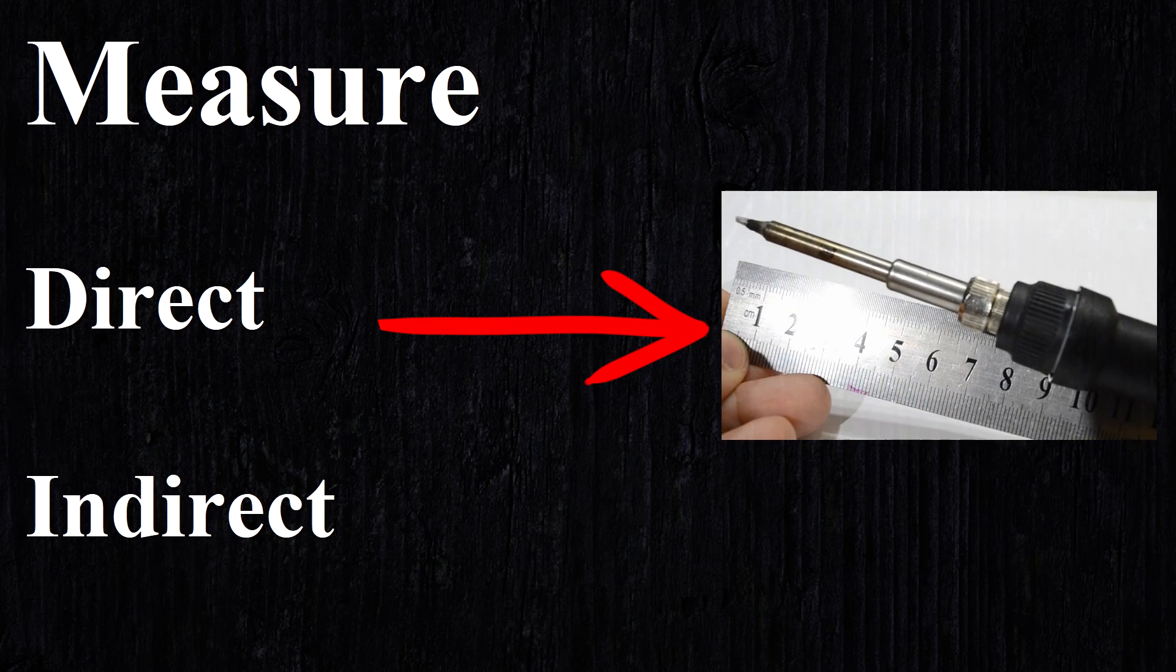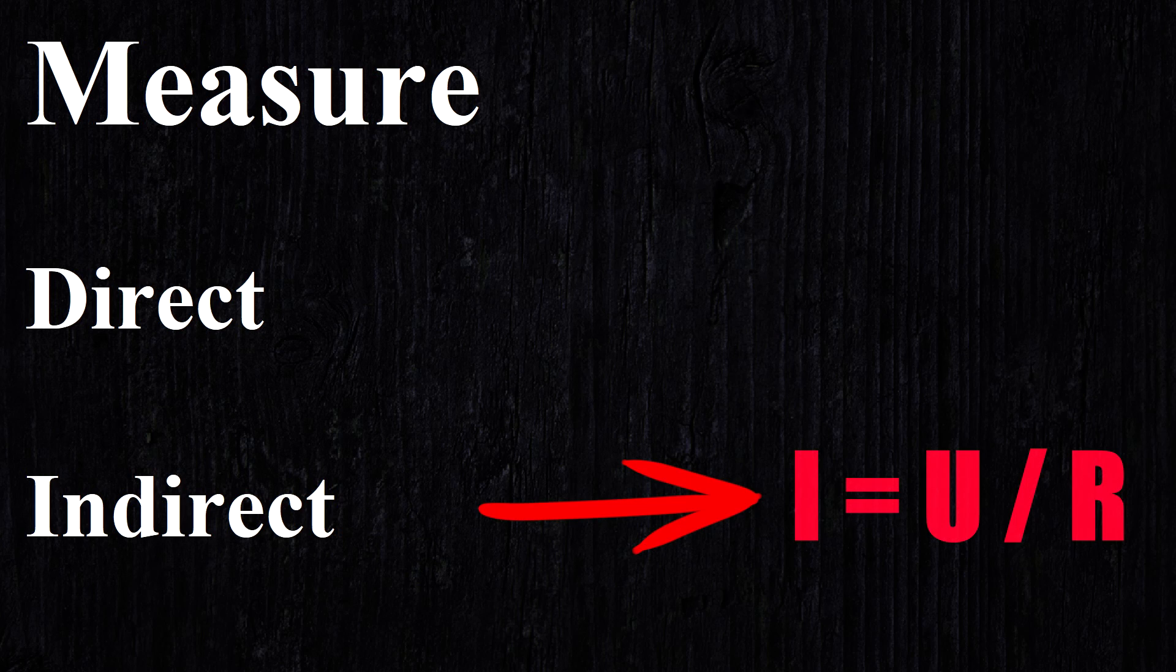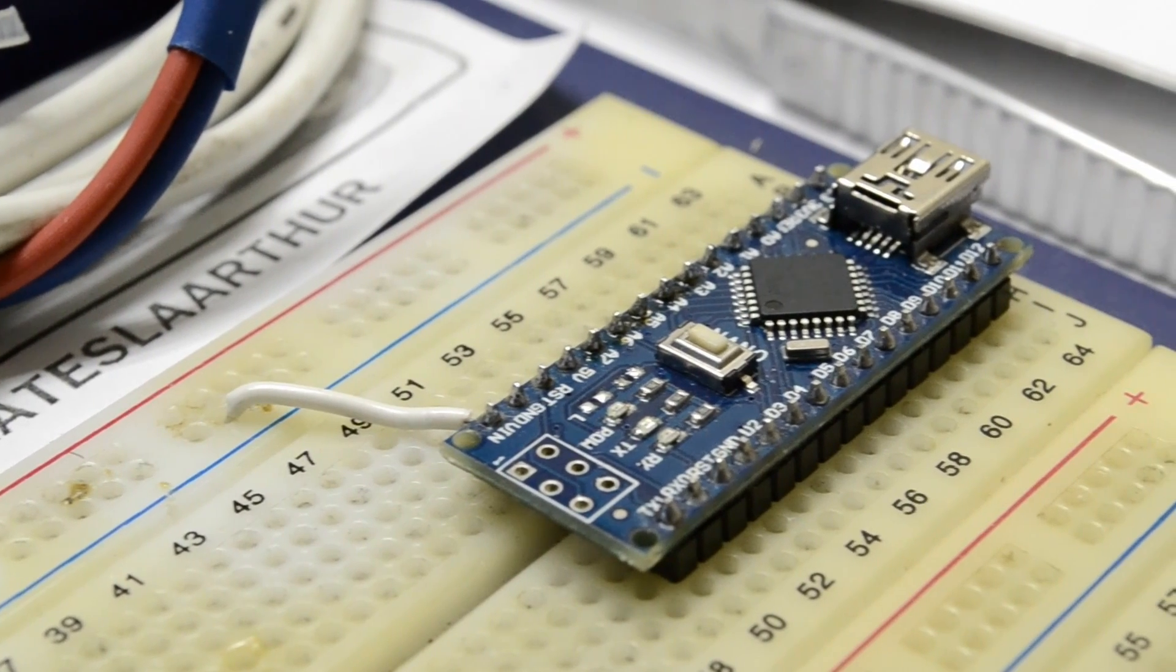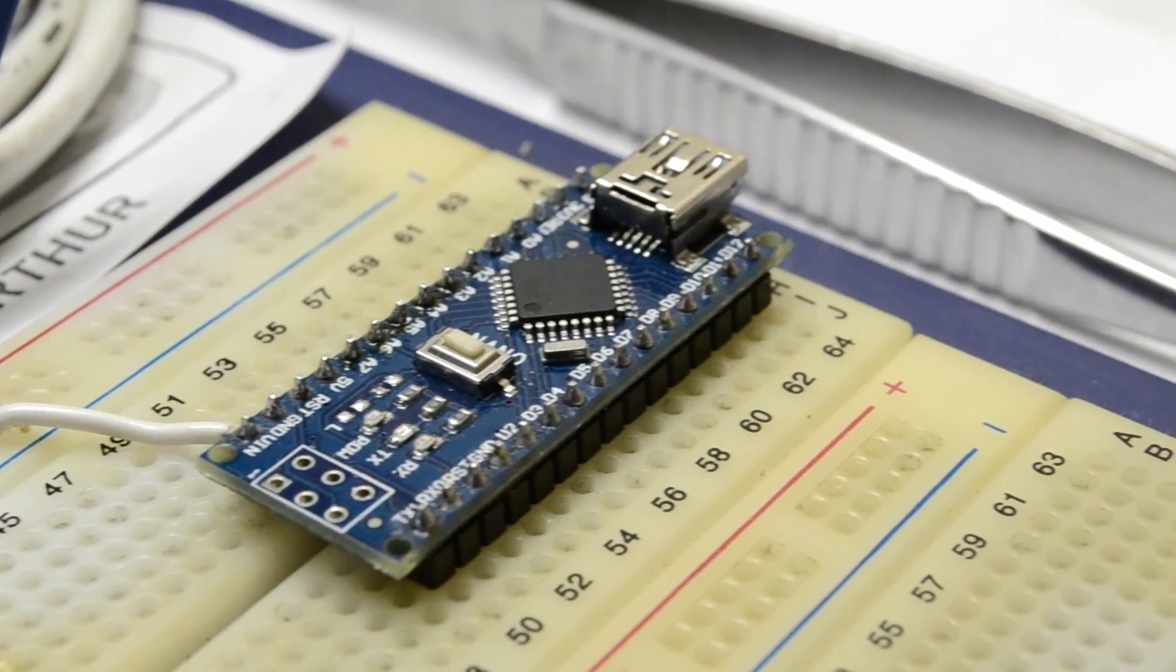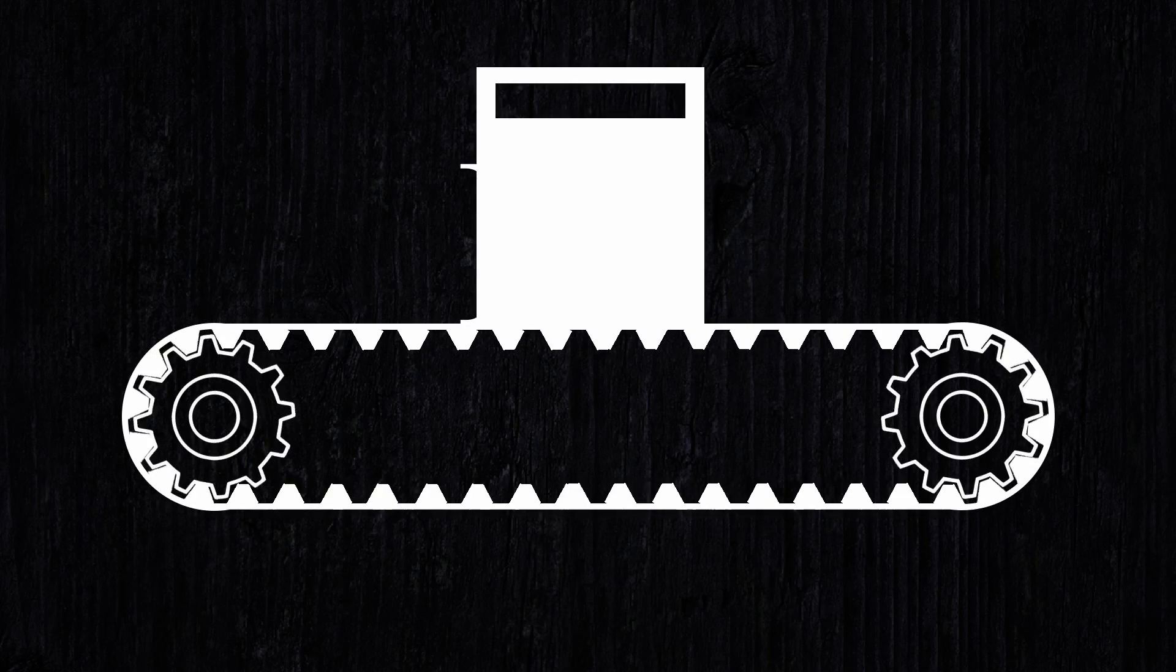the length of our soldering iron in centimeters. At the indirect method, we measure the value that is associated with the desired value by some known function. Therefore, having measured one, we can convert it to what we need. For example, you can use Ohm's law to calculate the current by measuring the voltage across the resistor. The Arduino Nano platform can only measure a voltage in the range from 0 to 5 volts. This means that all other values must be converted into voltage, then measured and recalculated.